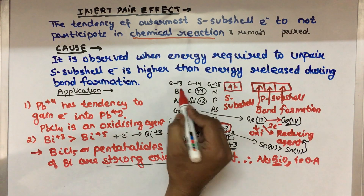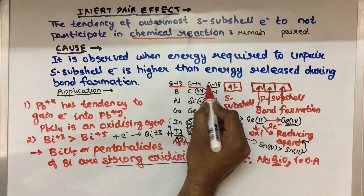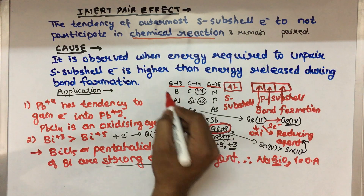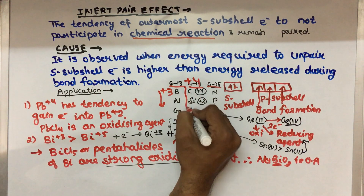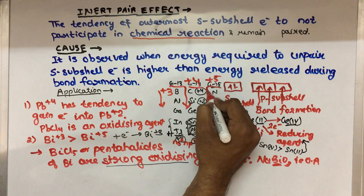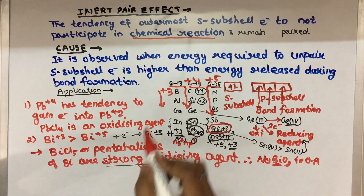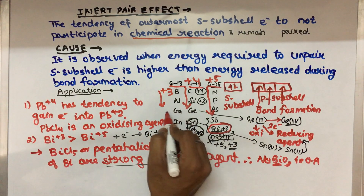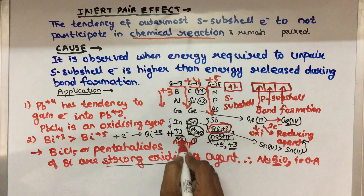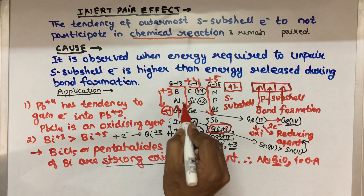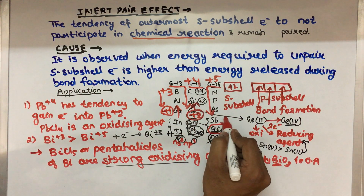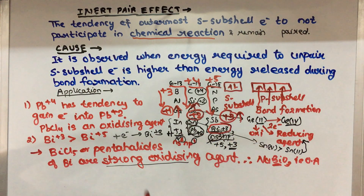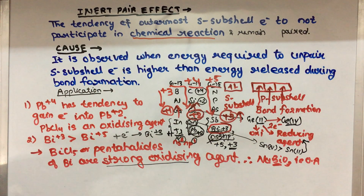On the same basis we can explain that in groups 13, 14, and 15, on moving down the group: the stability of the +3 oxidation state decreases (group 13), the stability of the +4 oxidation state decreases (group 14), and the stability of the +5 oxidation state decreases (group 15). But on the contrary, the stability of the +1 oxidation state increases (group 13), the stability of the +2 oxidation state increases (group 14), and the stability of the +3 oxidation state increases (group 15).